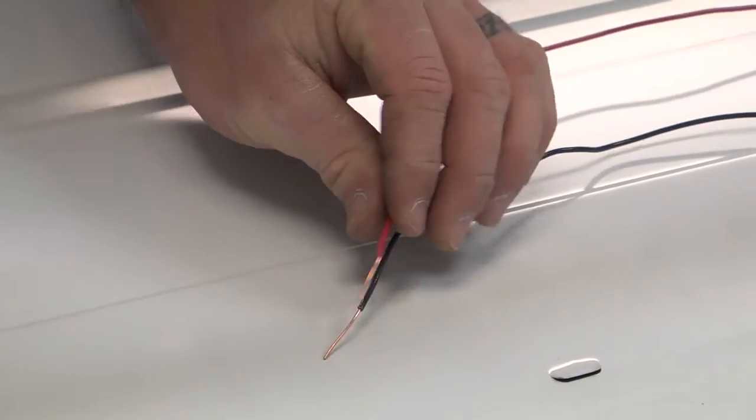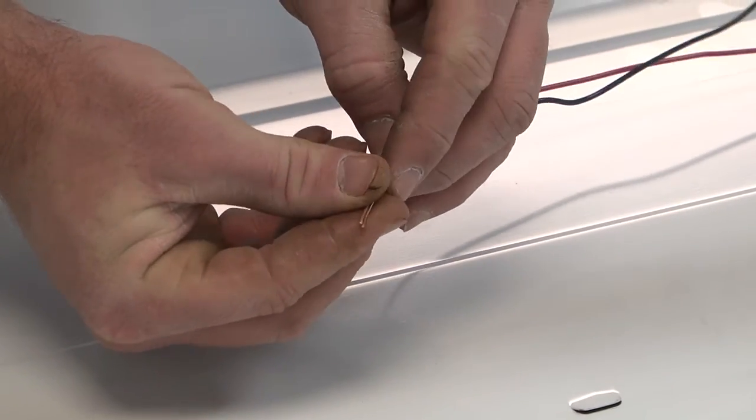Connect your socket lead live wire to your main source live wire and secure it with a wire nut as well.